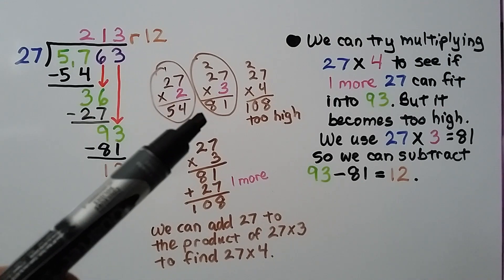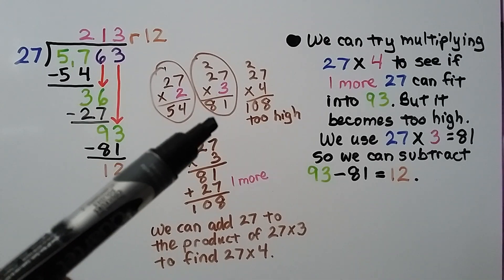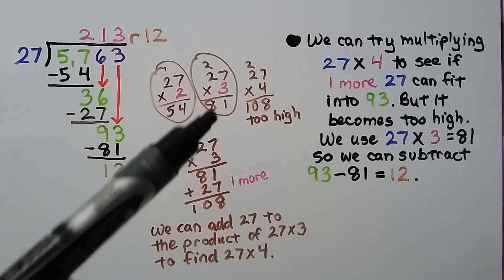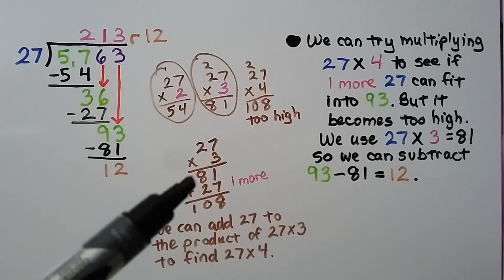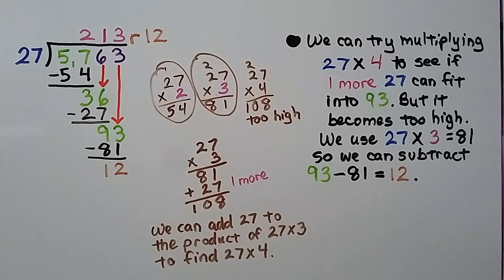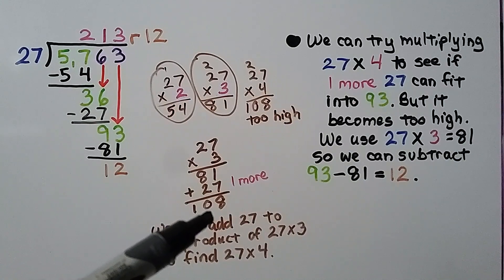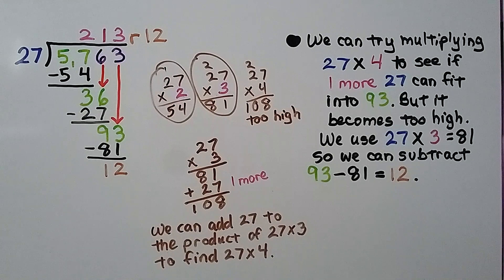A helpful tip: instead of multiplying 27 times 4 after multiplying 27 times 3, we can just add a 27 to the 81. If that's 3 twenty-sevens and we add one more, that's 4 twenty-sevens, equaling 108. We can then add another 27 to find 27 times 5, and so on.